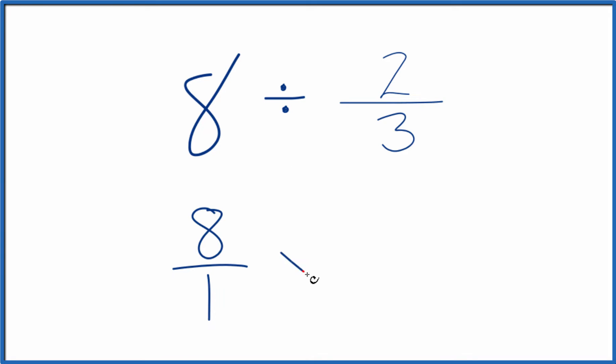Instead of division, let's multiply by the reciprocal of 2 thirds. So to take the reciprocal for a number, we move the numerator down to the bottom, the denominator comes up to the top. So we have 3 over 2.